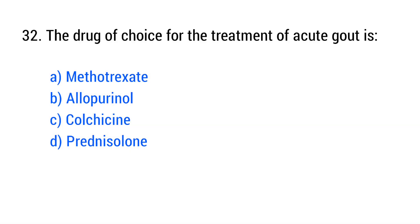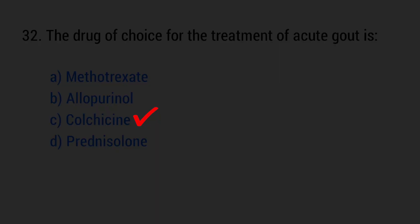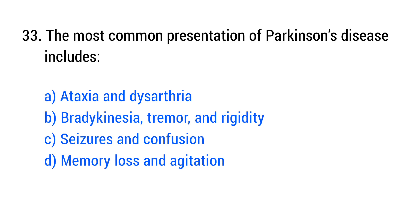Question number 32. The drug of choice for the treatment of acute gout is? The right answer is option C: Colchicine.